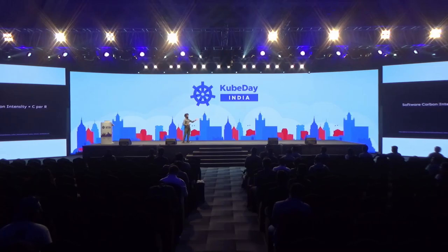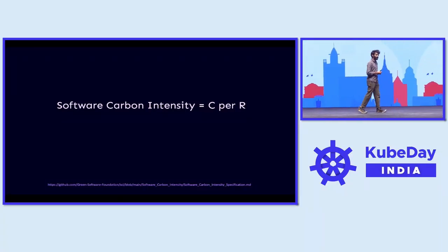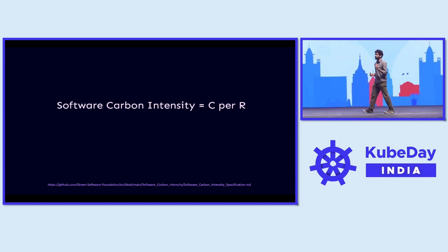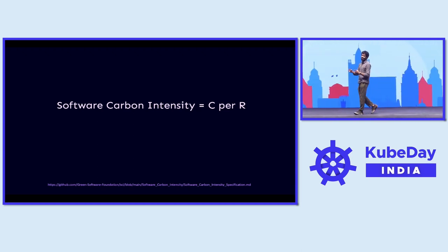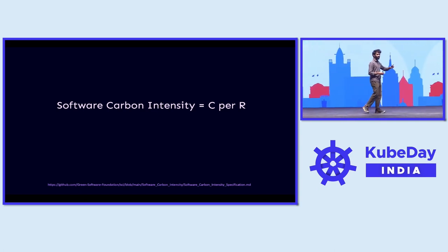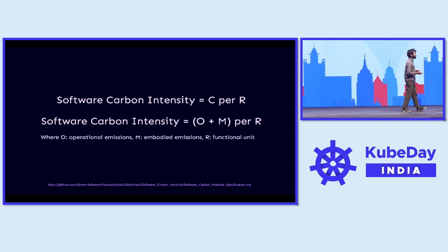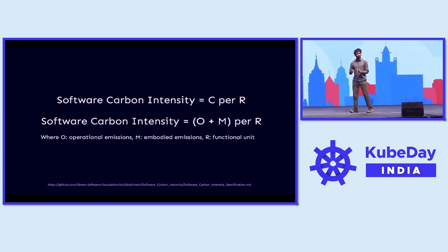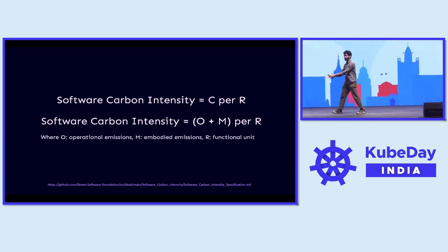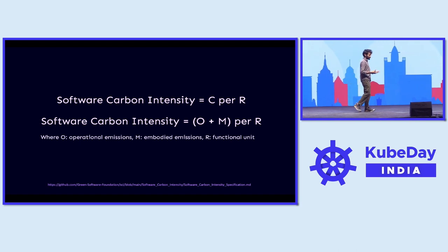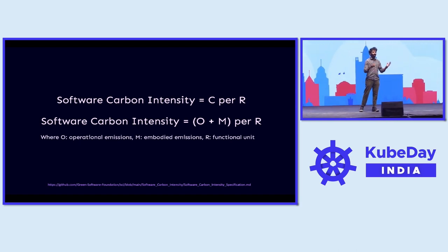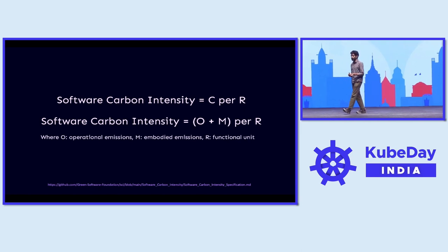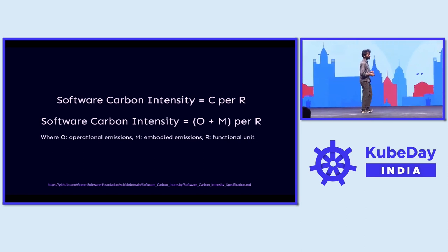I have to start off with this formula defined by the Green Software Foundation. They define software carbon intensity of a workload in the cloud as C per R, which is the carbon per rate — per user, per API, per machine learning run, or whatever. The C can be expanded to O plus M, where O is operational emissions — the carbon emission of your software running on hardware in the cloud — and M is the embodied emissions, meaning the carbon cost for that hardware to exist and run software over time. Your software is a fraction of that. Those two things combined, per rate, is the software carbon intensity.